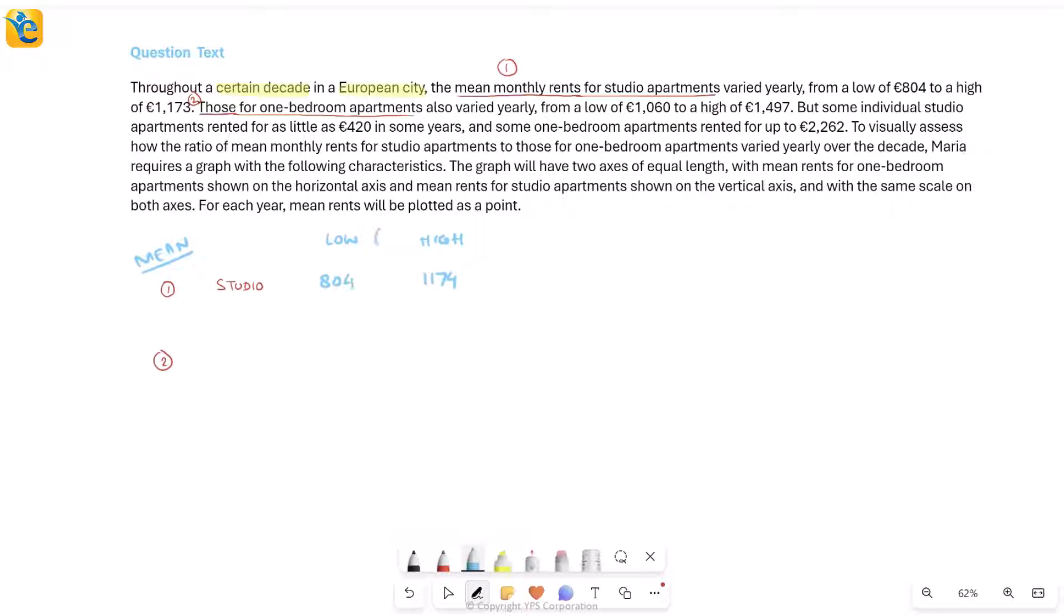Then they've given you the exact same thing for one bedroom apartments. As you read further, it tells you that even these vary. This time the low is 1060, the high is 1497. Let me put these. Now let's read further.